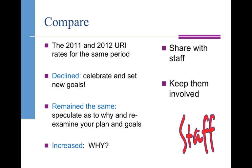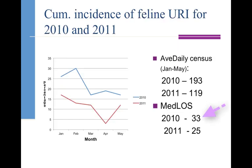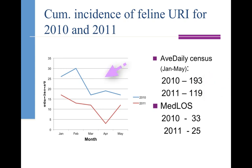Here's a shelter that Dr. Berliner was working with where the initial goal was to lower the median length of stay — cats were staying a median of 33 days, meaning half the cats were staying more than 33 days. That's a very long length of stay. In a year, using many strategies, we lowered that to 25 days. The daily census subsequently dropped as well. And then, wonderfully, look what happened to the rates of upper respiratory disease — they dramatically declined.